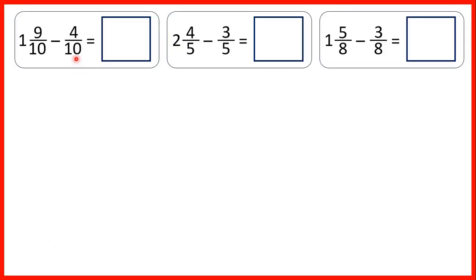Now we need to subtract a fraction from a mixed number. First we have 1 and 9 tenths minus 4 tenths. Let's see if we can subtract 4 tenths from 9 tenths. Remember, when we subtract fractions, the denominator stays the same, and 9 minus 4 is 5, so our fraction is 5 tenths.